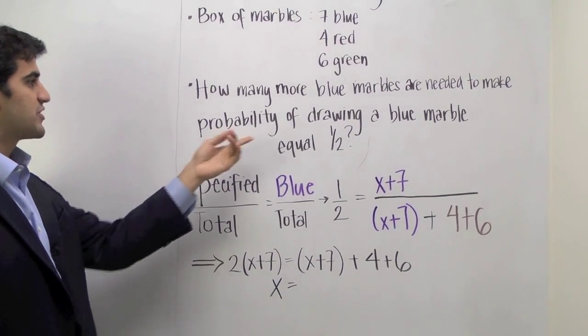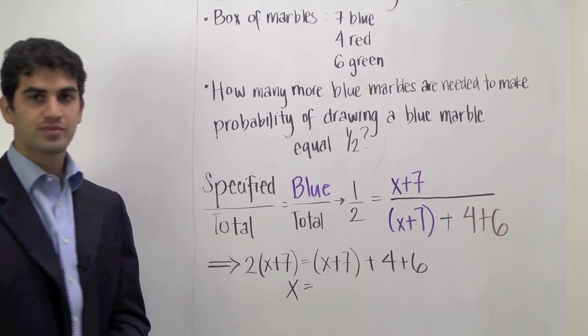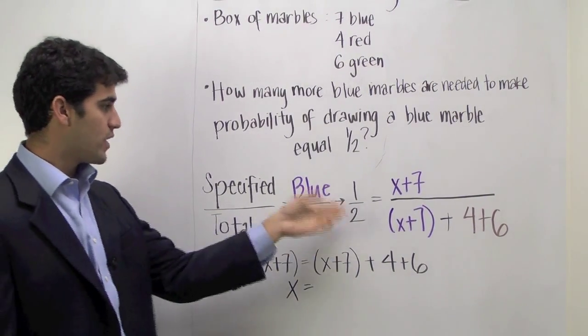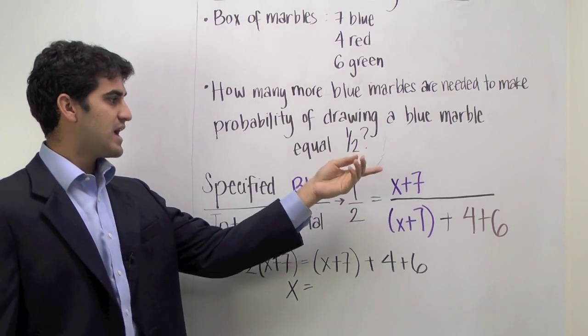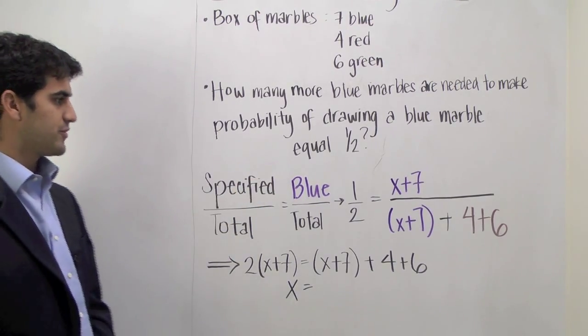So if I want the number of blue marbles divided by the total number of marbles to equal 1 half, then that's the same as saying that 1 half must be equal to x plus 7, where x is the number of blue marbles we're adding, divided by the total number of marbles.